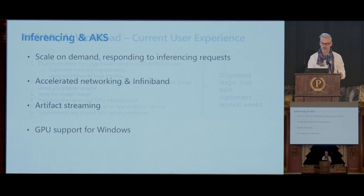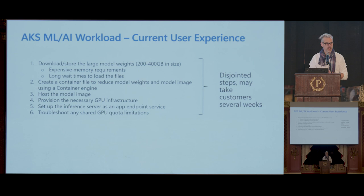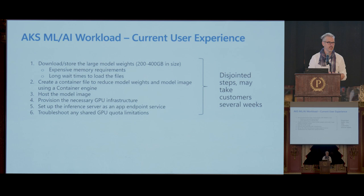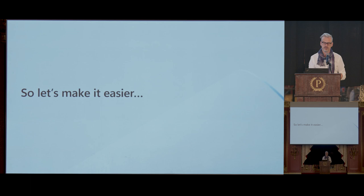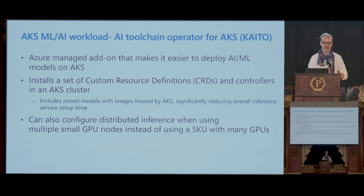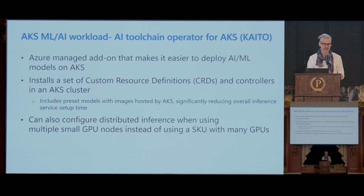I'm going to be handing over to Amanda soon, but there are just a couple of things I want to show first. The current user experience is quite complicated. AKS and Azure can take you quite a way to start hosting these models, but you still need to figure out how to host it, how to deploy it, how to scale it, and what GPU infrastructure you need. It's quite disjointed. So today we're announcing Kaito — the Kubernetes AI Toolchain Operator — which is basically an operator that allows you to deploy these applications, taking all of those disjointed aspects and deploying, running, and hosting the model for you with very little overhead. We're really pleased with the announcement of this today.